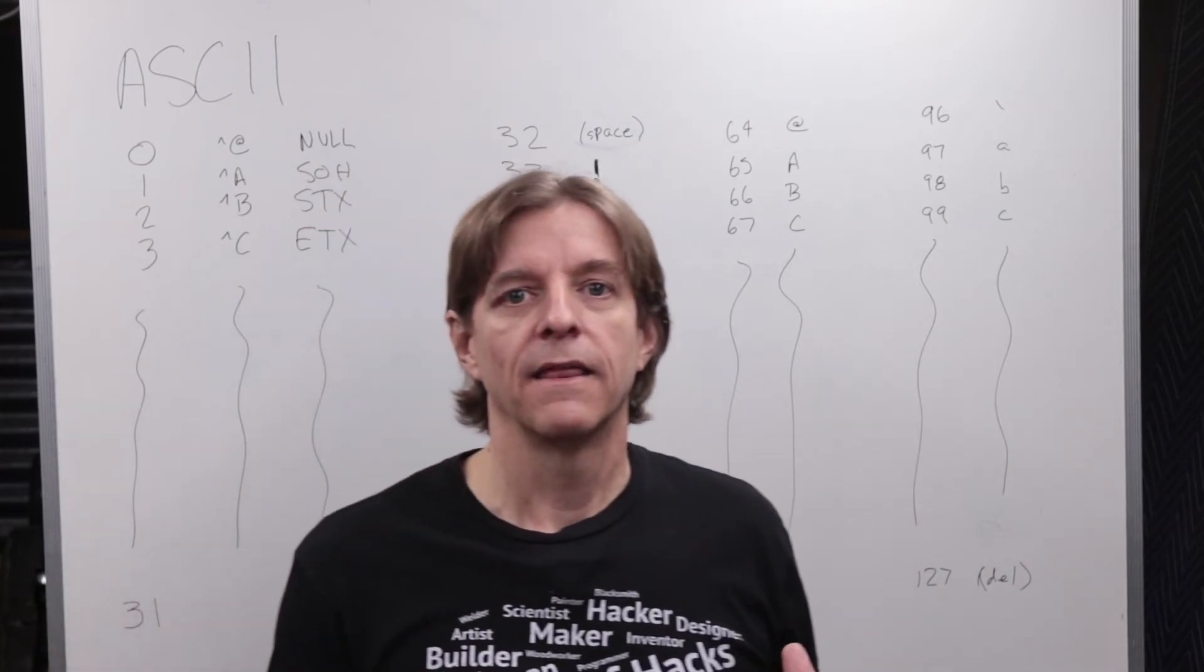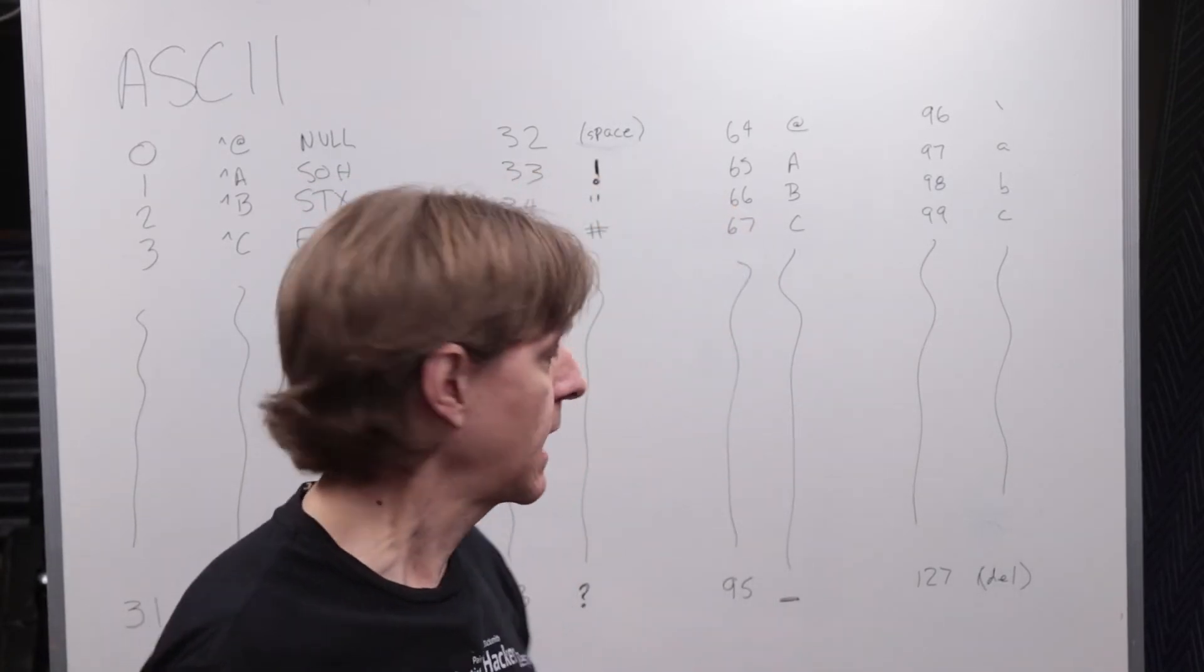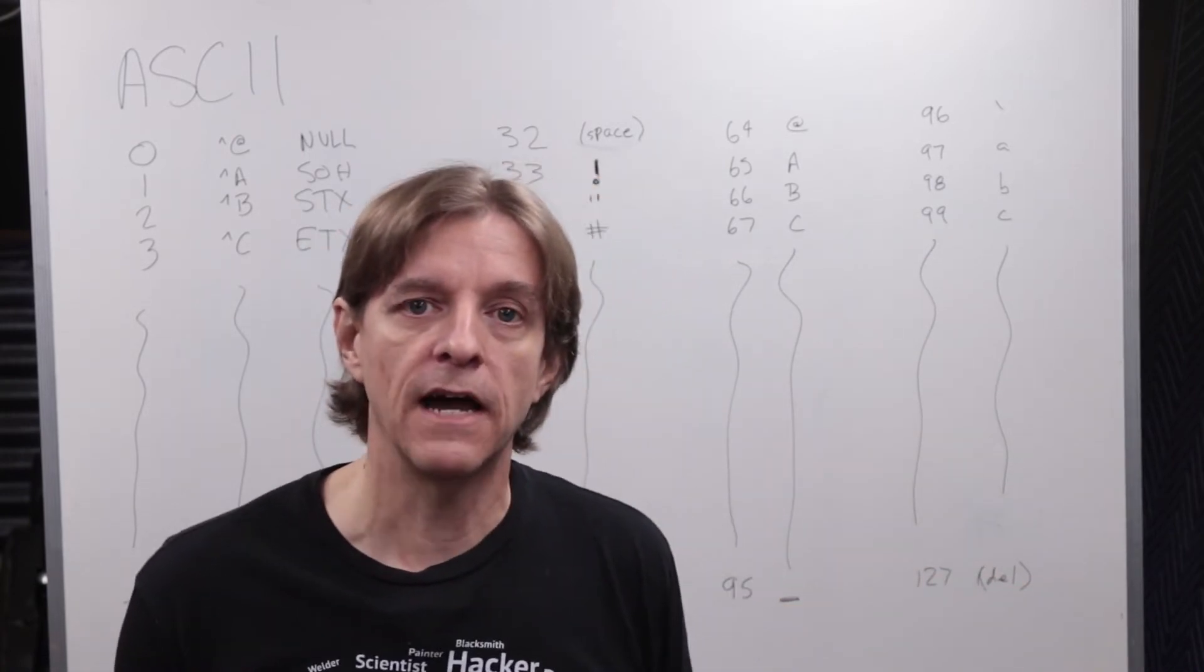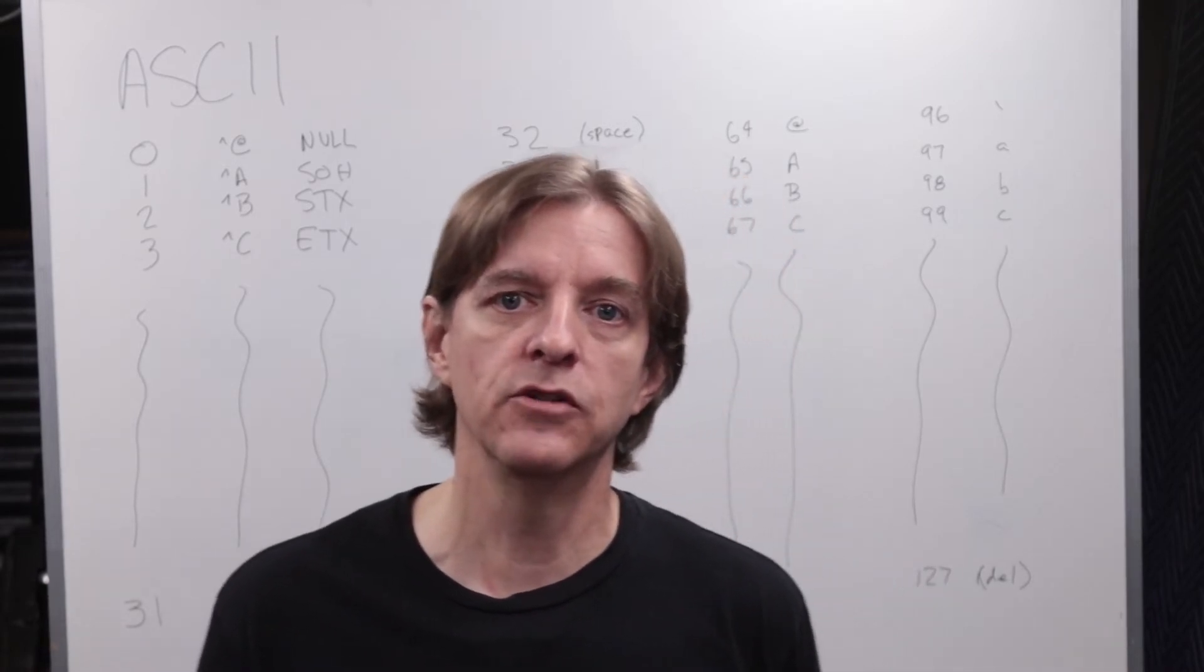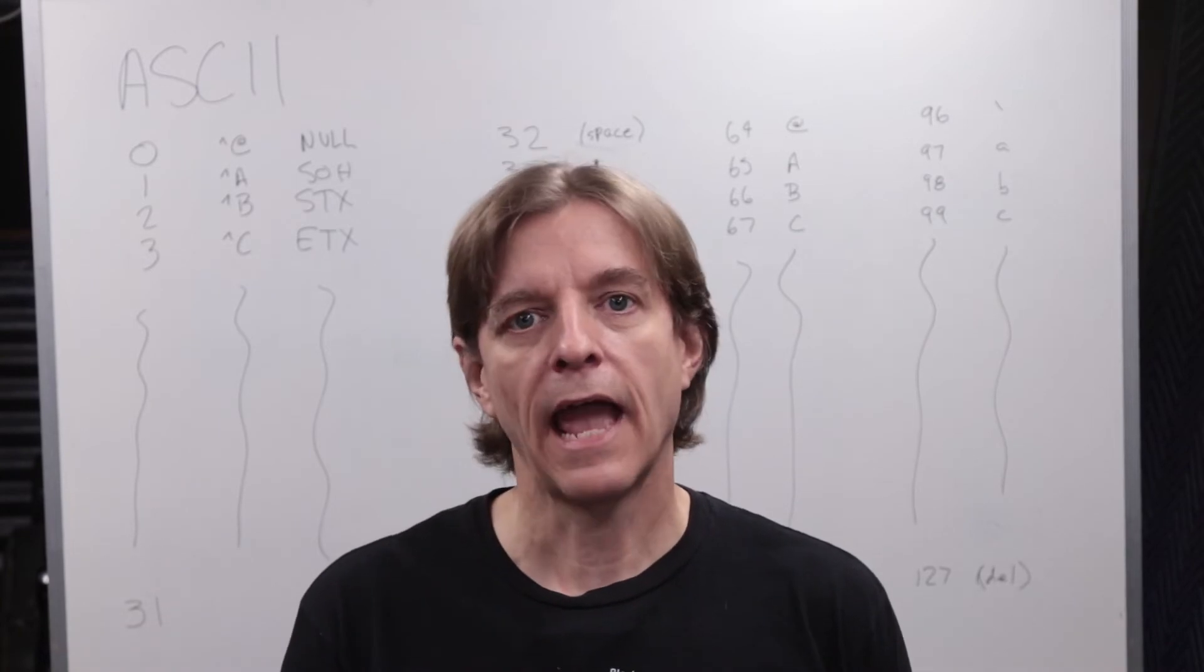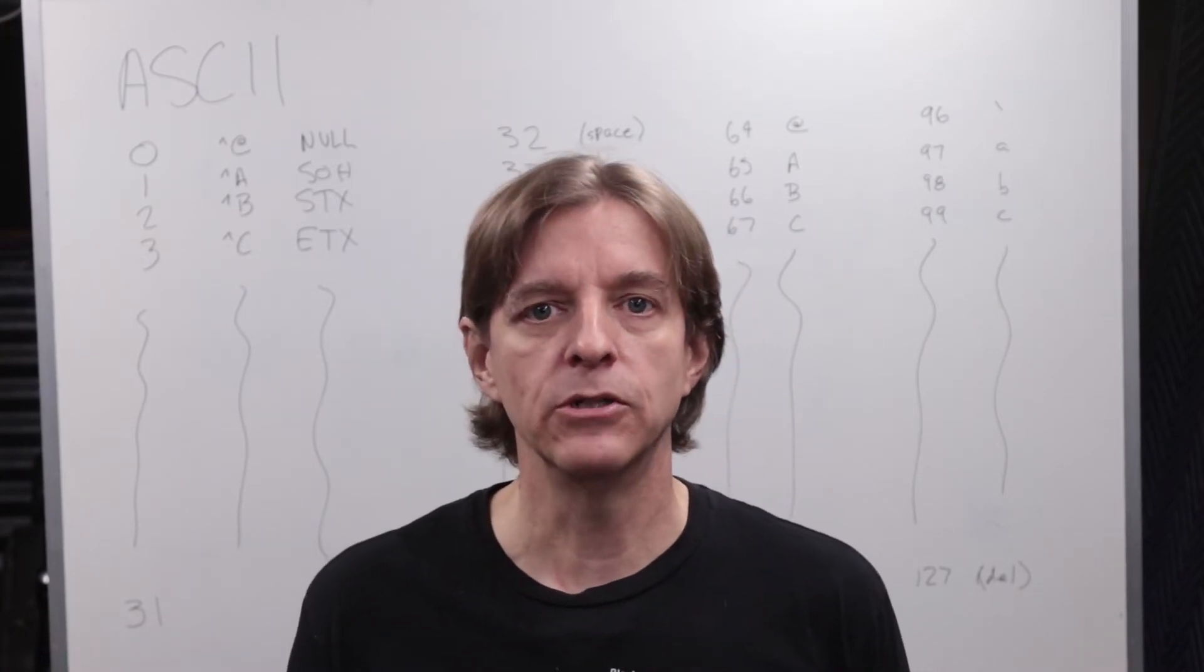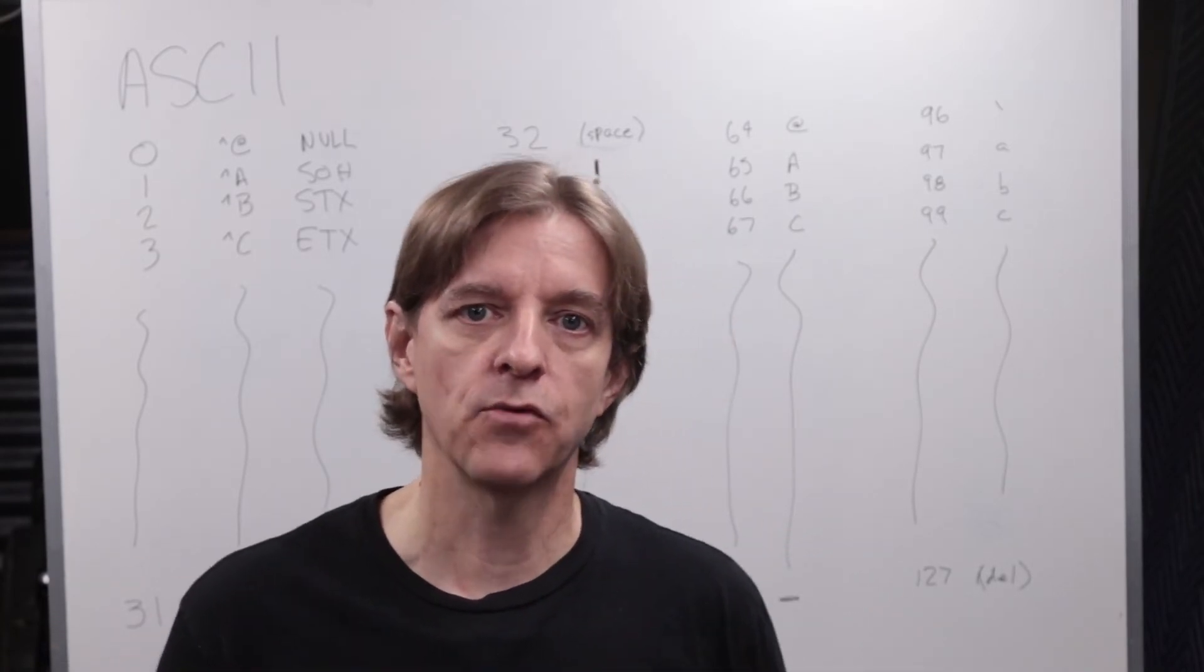Now to get to Christopher's point, the extended character set came in later and it defined numbers from 128 to 255, which happens to correspond to the negative numbers that we saw in the two's complement video. These characters are things like A with an umlaut over it or U with an umlaut over it for foreign languages and special line drawing things on CRT screens.